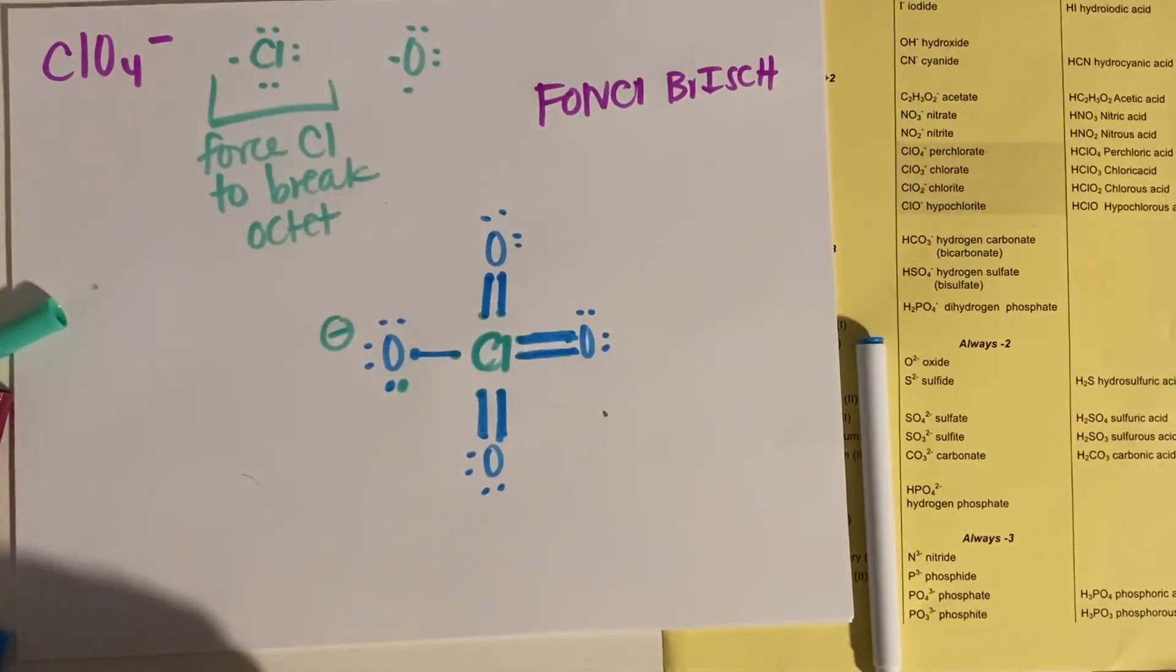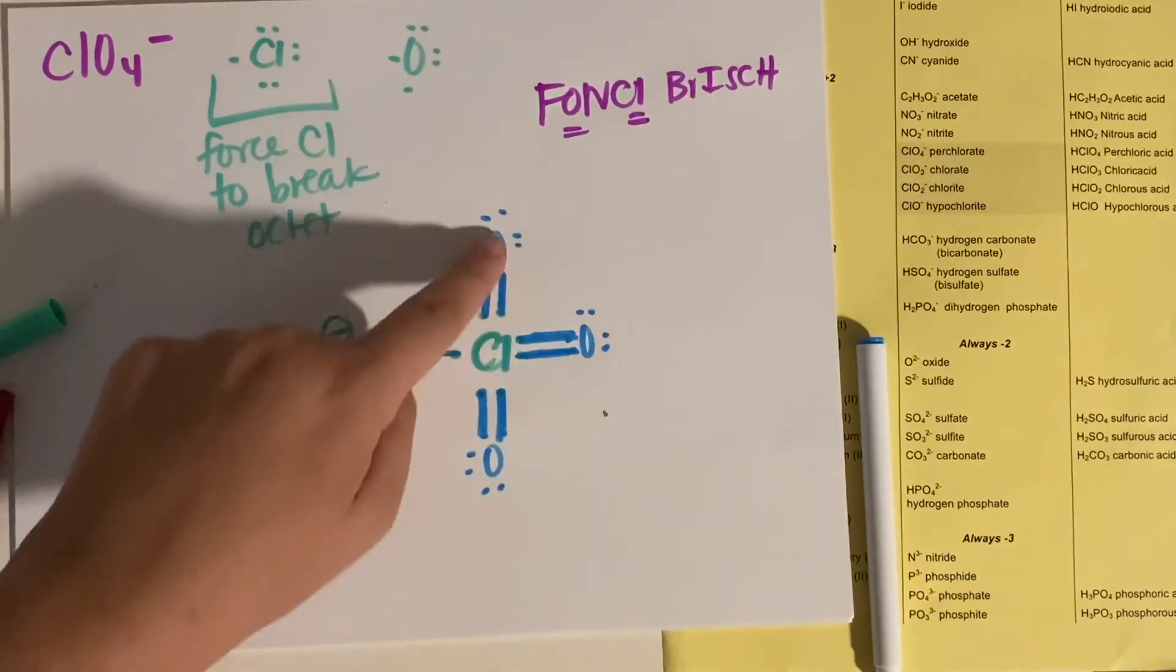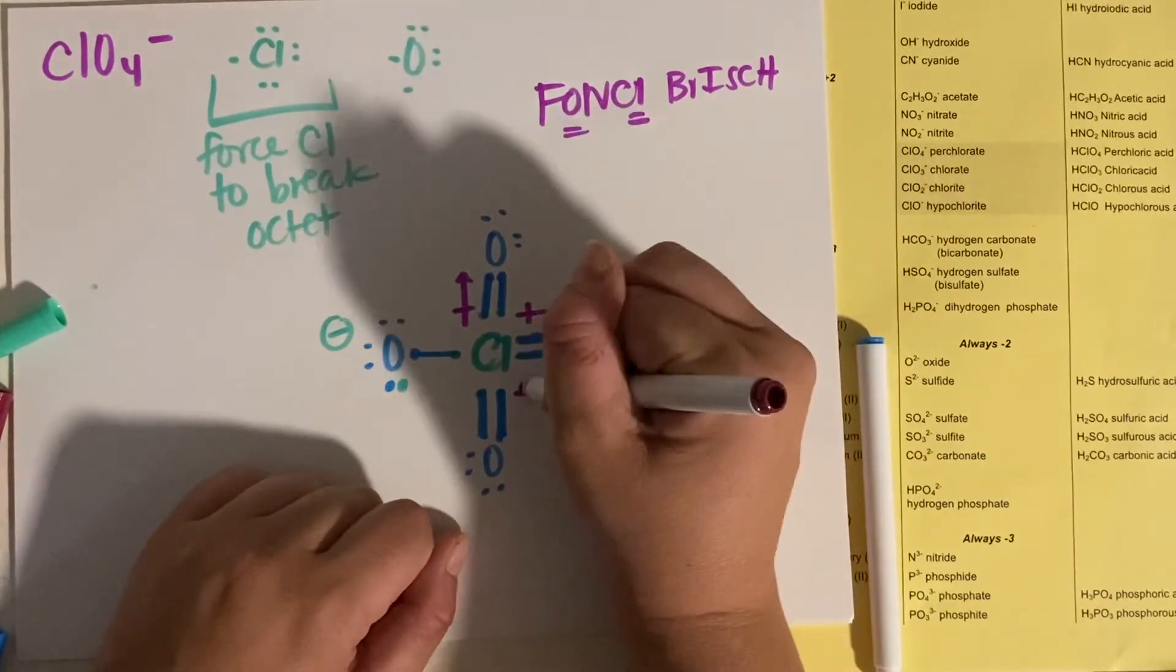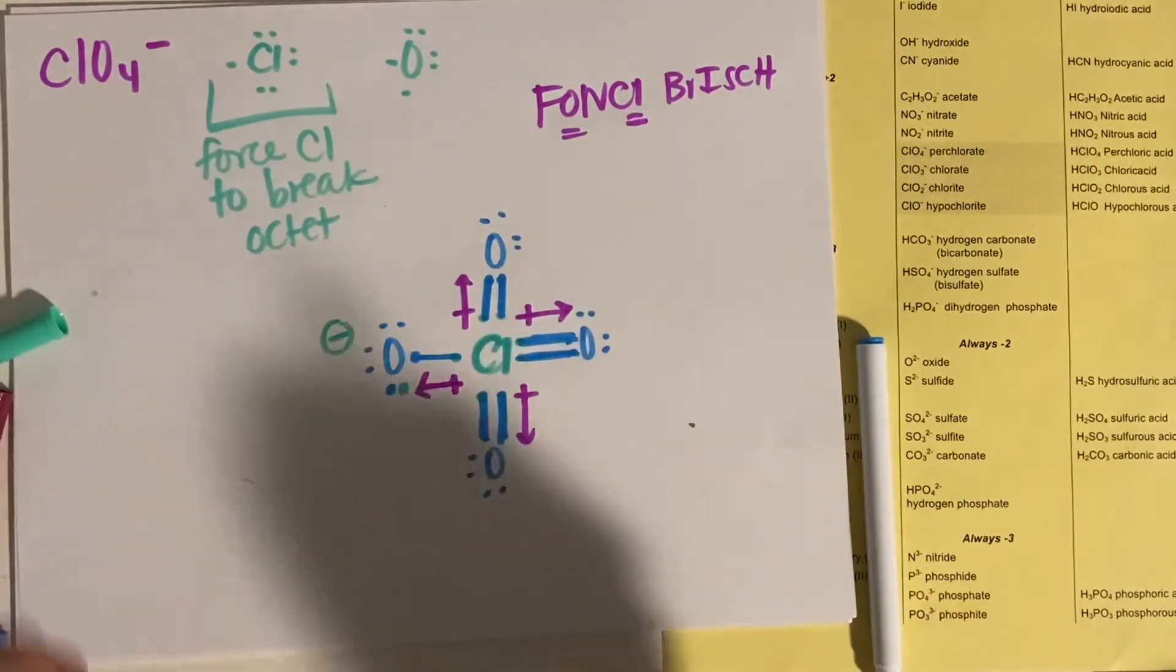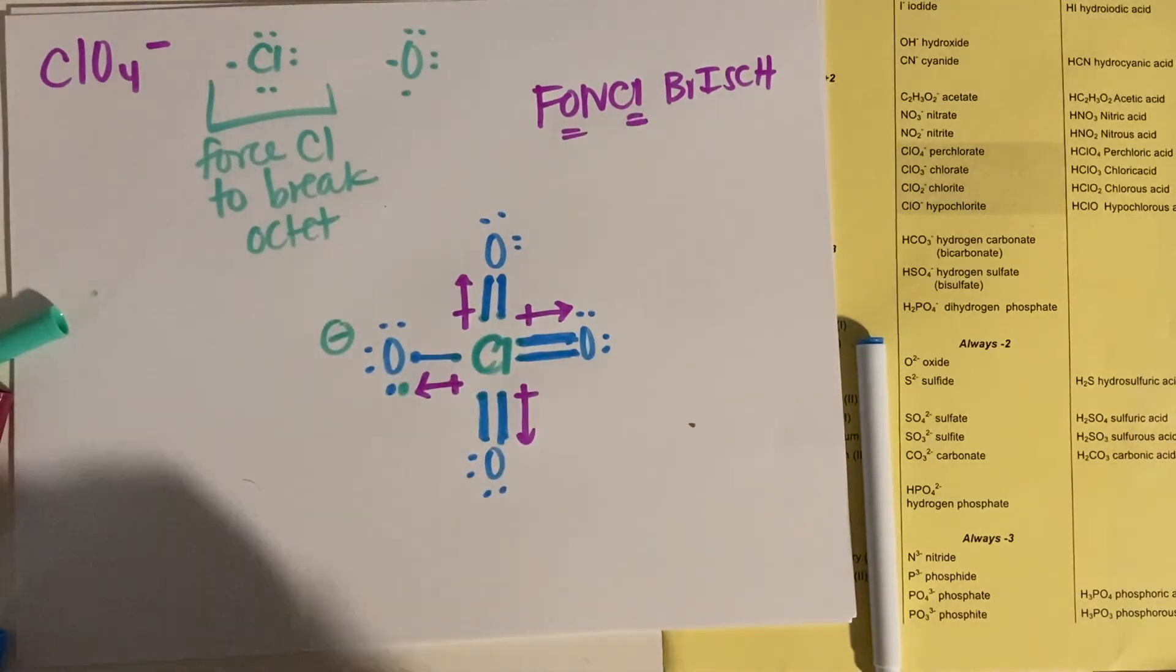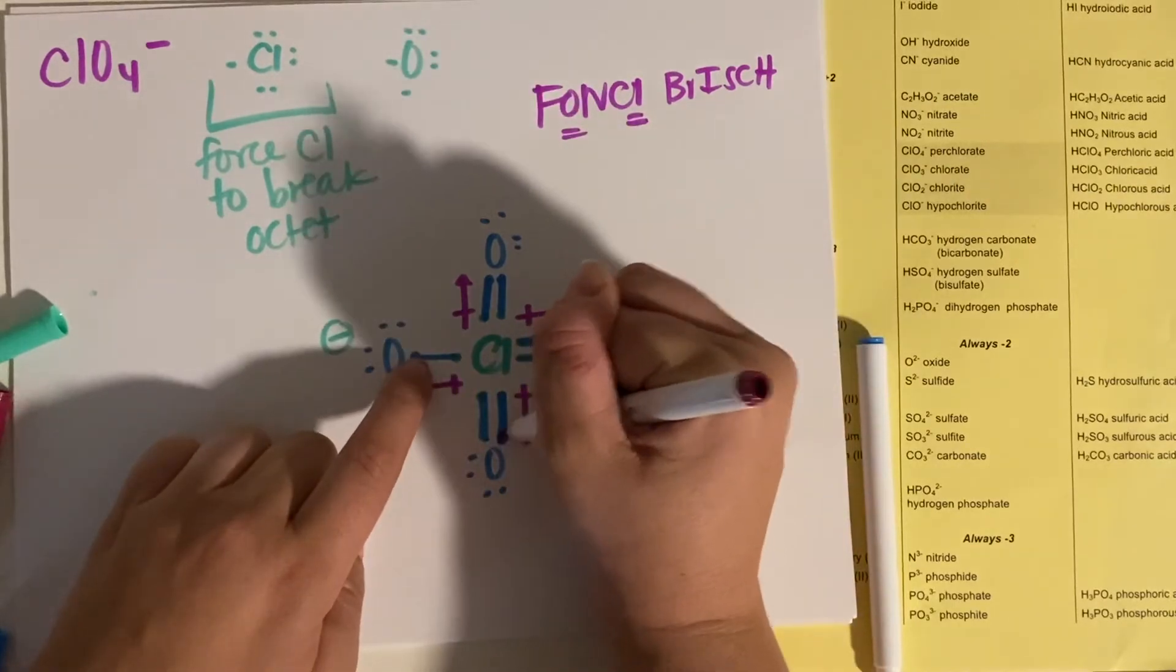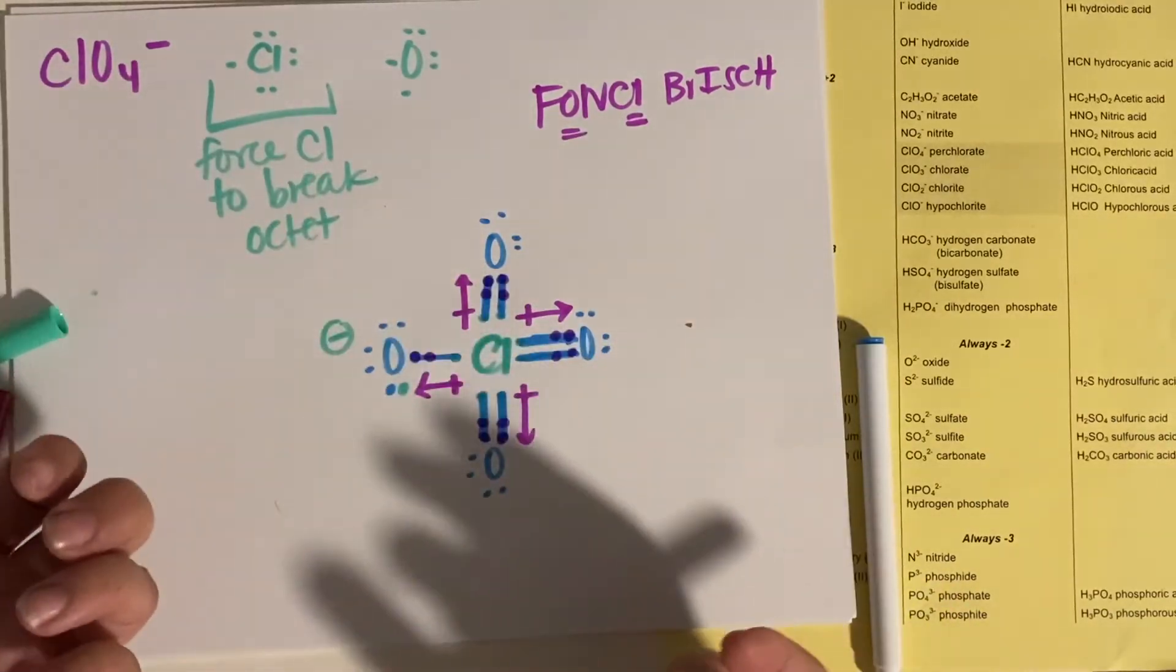Electronegativity. If you remember, oxygen is more electronegative than chlorine. So these are all polar bonds. And even though I have forced chlorine to break its octet rule, all of your electrons are actually going to be shared closer to oxygen, because oxygen is more electronegative. So he's pulling on those electrons harder than chlorine is pulling on them.